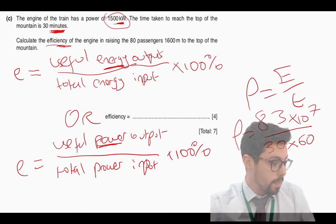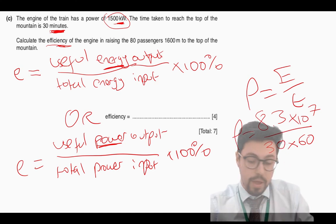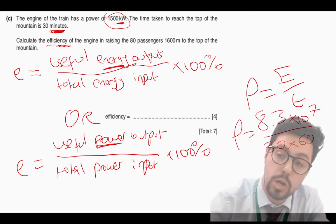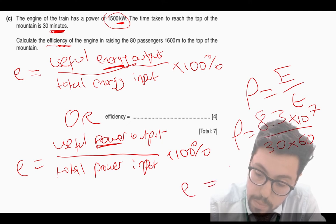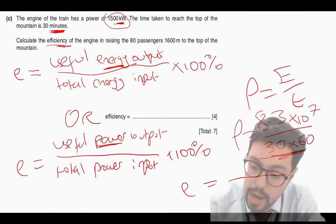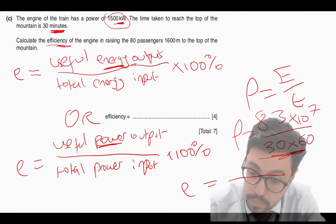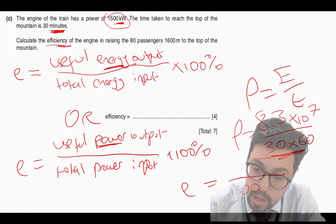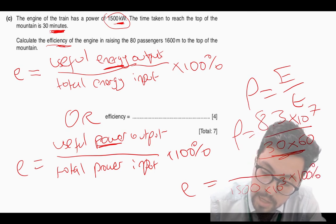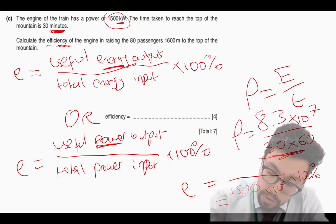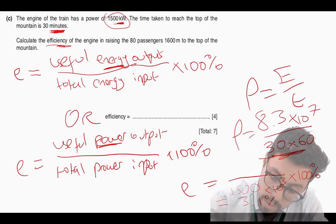Then I just need to put that power and my total power in to find the efficiency. So the efficiency will be this number divided by my total power in, which is 1500 kilowatts so times 10 to the 3. If you times that by 100% at the end, you will get 3.1%.